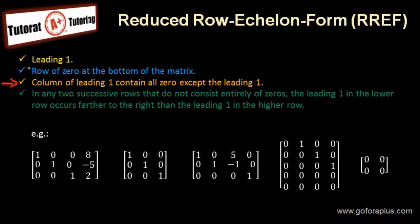First example, we need to have leading one, so we do have leading one. Now on the left side of the leading one, they are all zero, and the row of zero at the bottom of the matrix. Here we don't have the row of zero, but the column of leading one contains all zeros. If we look at this, this is all zero because the leading one is right here. On top and at the bottom of these leading ones, they are all zero. The main point is to have the leading one by itself with all the zeros on top and at the bottom.